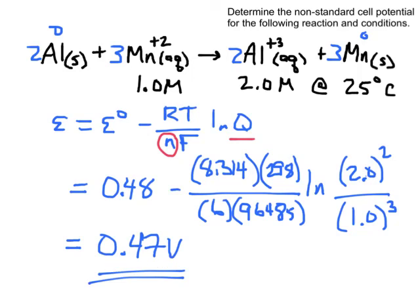So there's an example of non-standard cell potentials using the Nernst equation. Be on the lookout for the common mistakes of how to set up the reaction quotient correctly and how to correctly identify the number of electrons being exchanged in the reaction. All right, so there's an example. All for now, we'll see you next time.